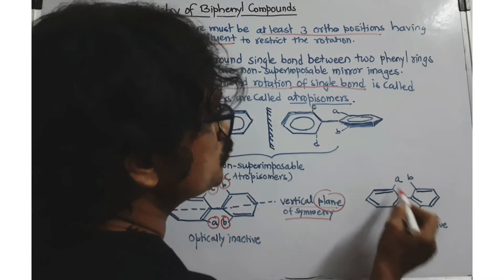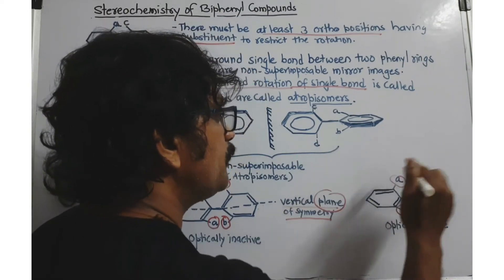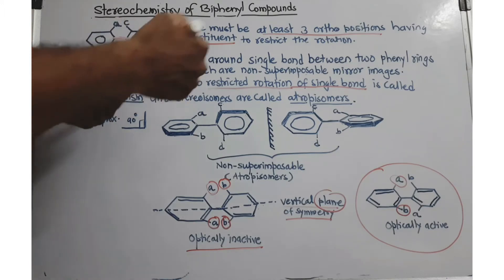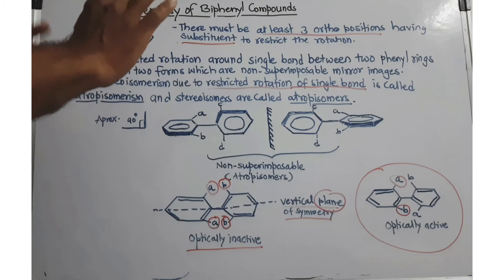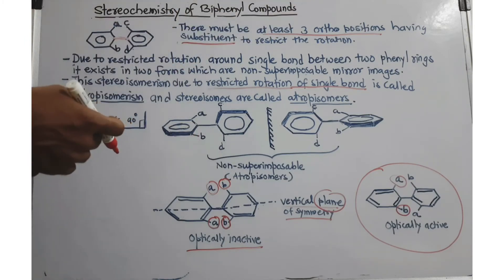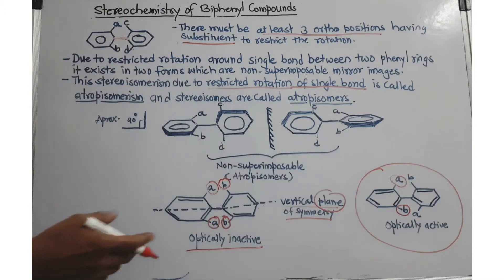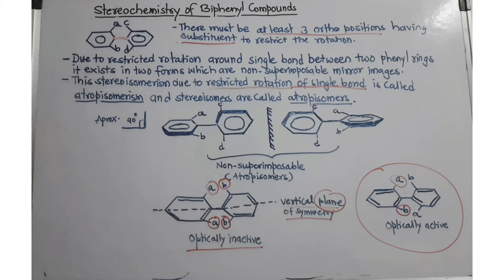Here, although there are just two different groups, they are not similarly attached, so you cannot cut this molecule into two halves. The plane of symmetry is gone, and if there is no plane of symmetry, this molecule is optically active. But the previous molecule is not optically active because there is a plane of symmetry. In short: there must be restricted rotation, which requires at least three — preferably four — ortho positions blocked with sufficiently large substituents, and there must be no vertical plane of symmetry.